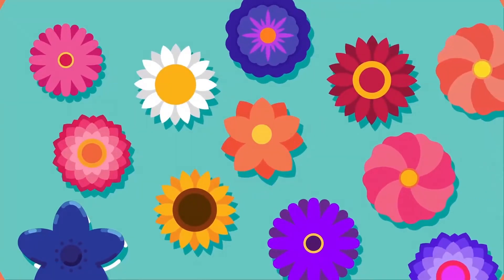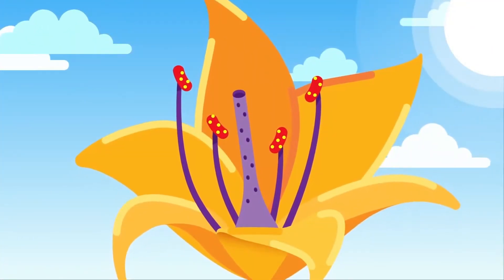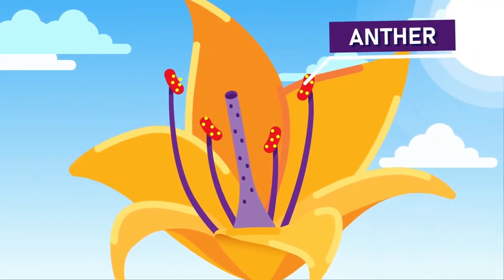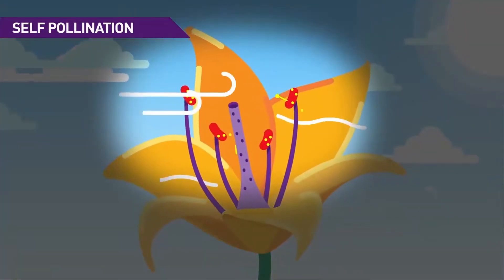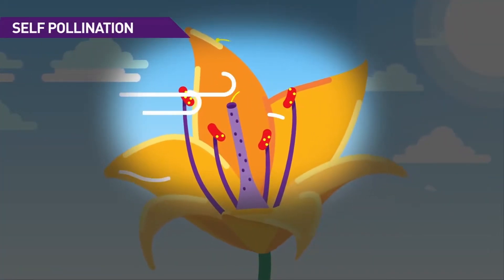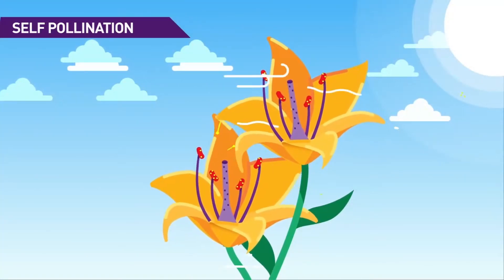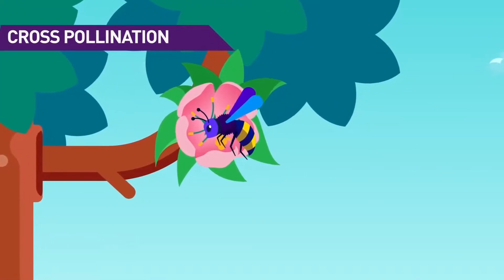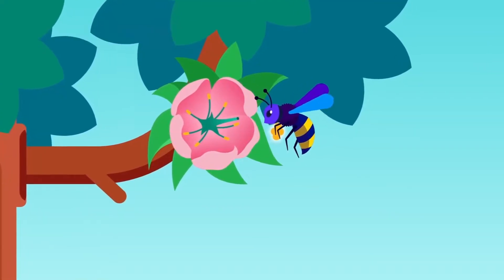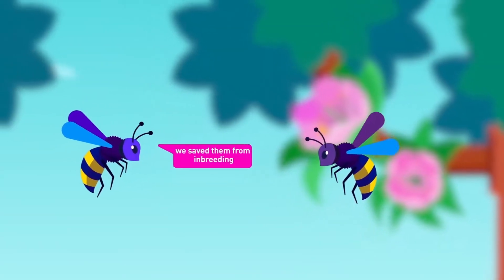Pollination is the transfer of pollen grains from the anther to the stigma. Self-pollination occurs when pollen grains transfer to the stigma of the same flower or a different flower on the same plant, whereas cross-pollination happens when pollen grains transfer to a flower on another plant of the same kind.